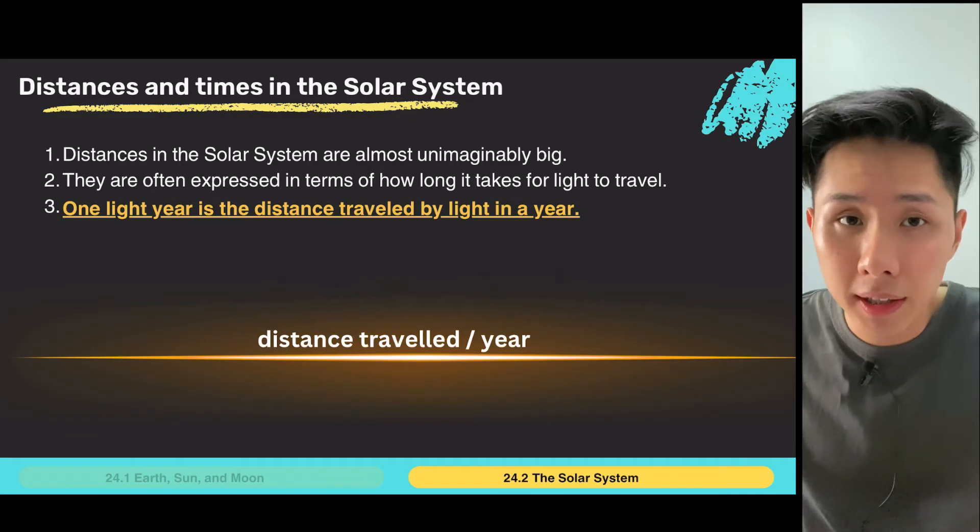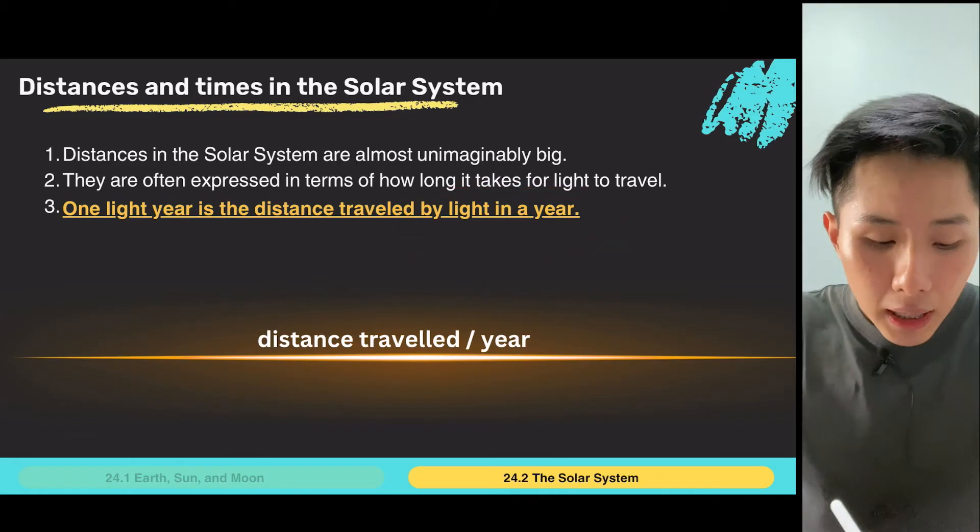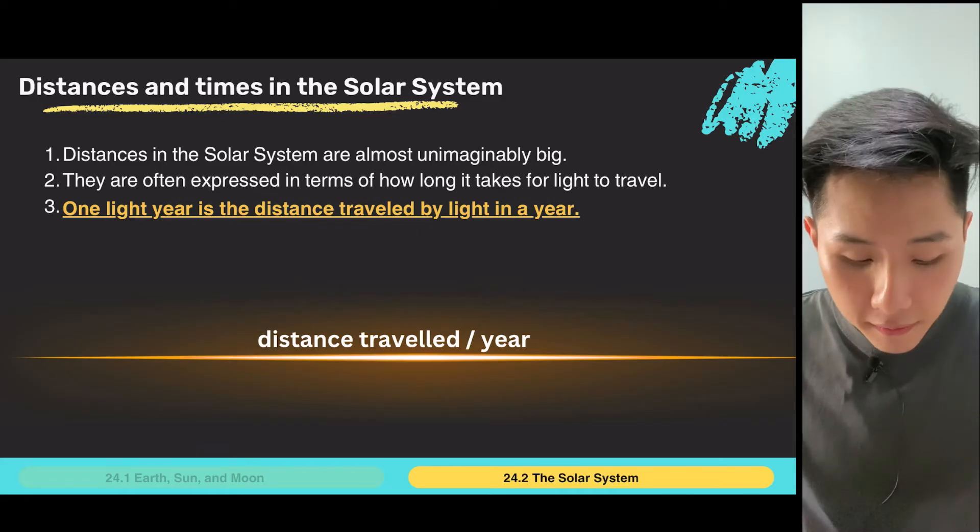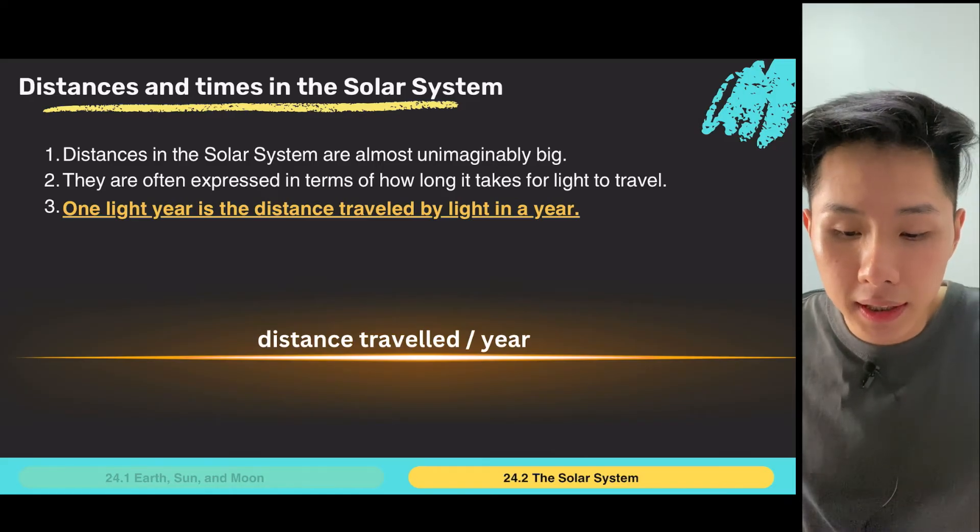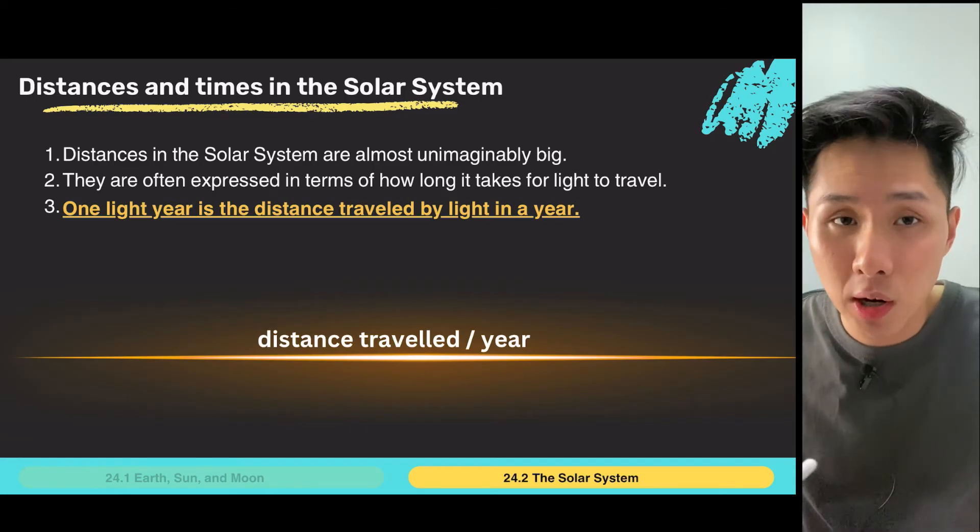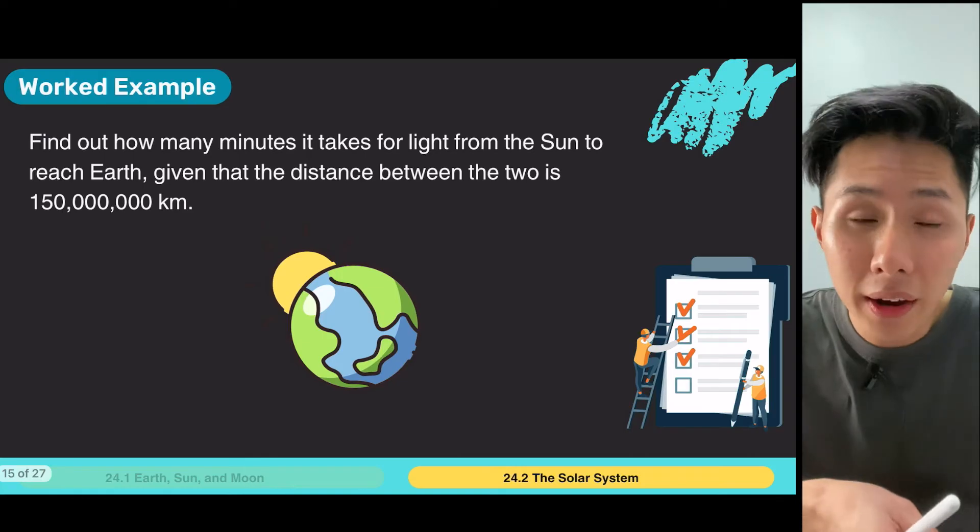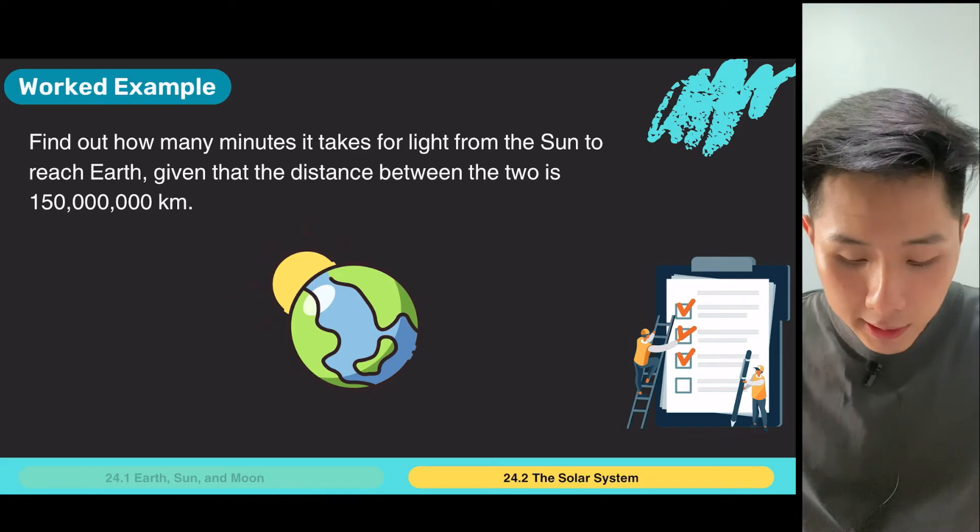Light year is not a time unit. It's not like one year. A light year is a distance unit. It measures how far the light travels in a year. So if, let's say, two planets are one light year away, it means that the distance between them is the amount of distance that light can travel in a year. And we'll look into light years further in the next chapter. But for now, let's solve some questions regarding the distance between different objects in the solar system.